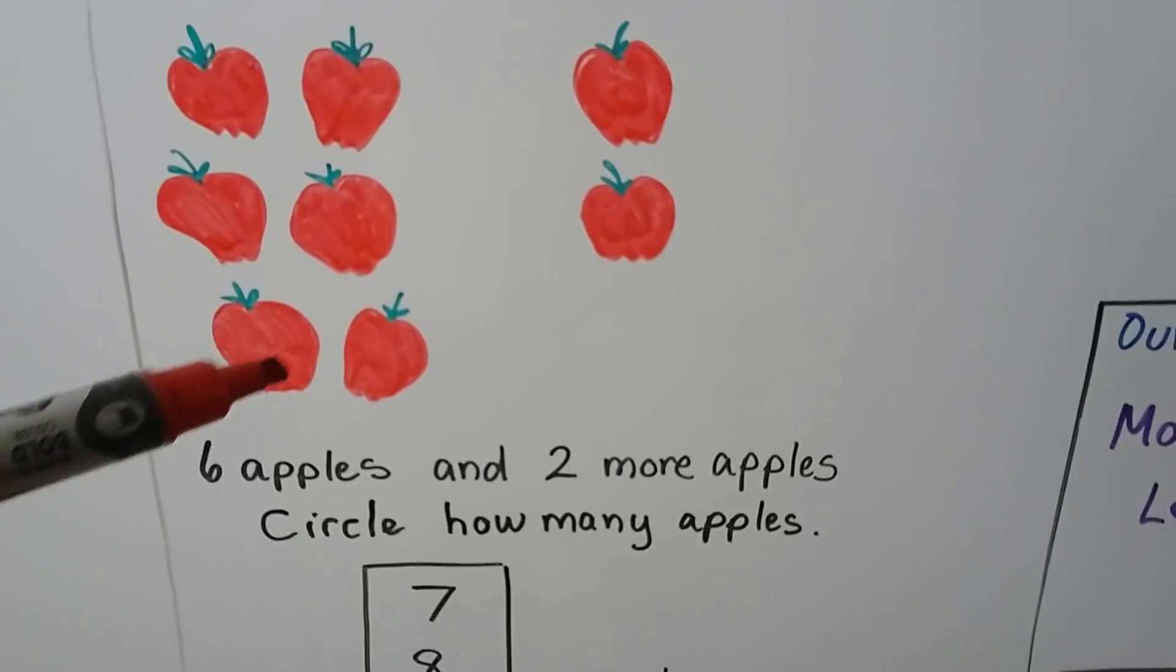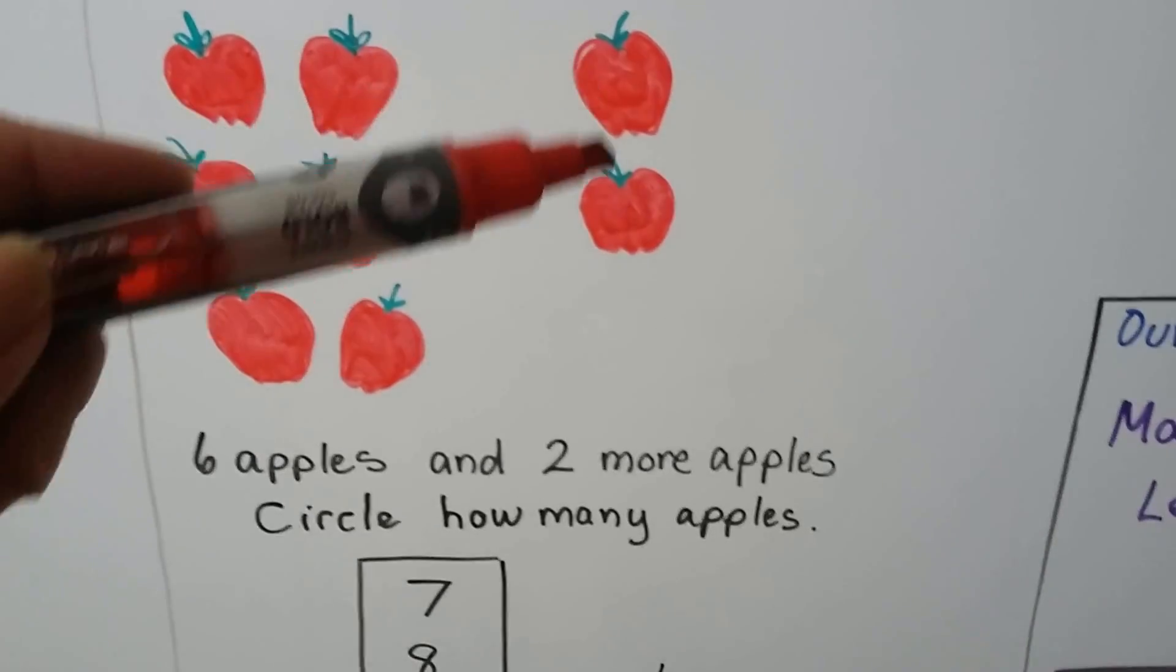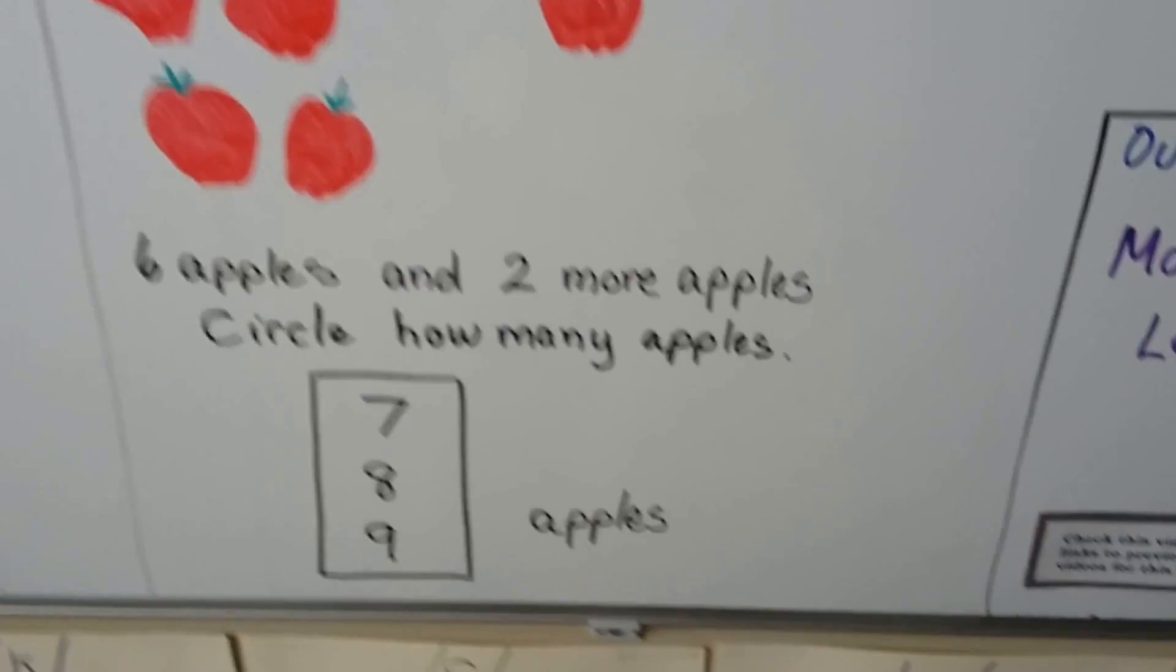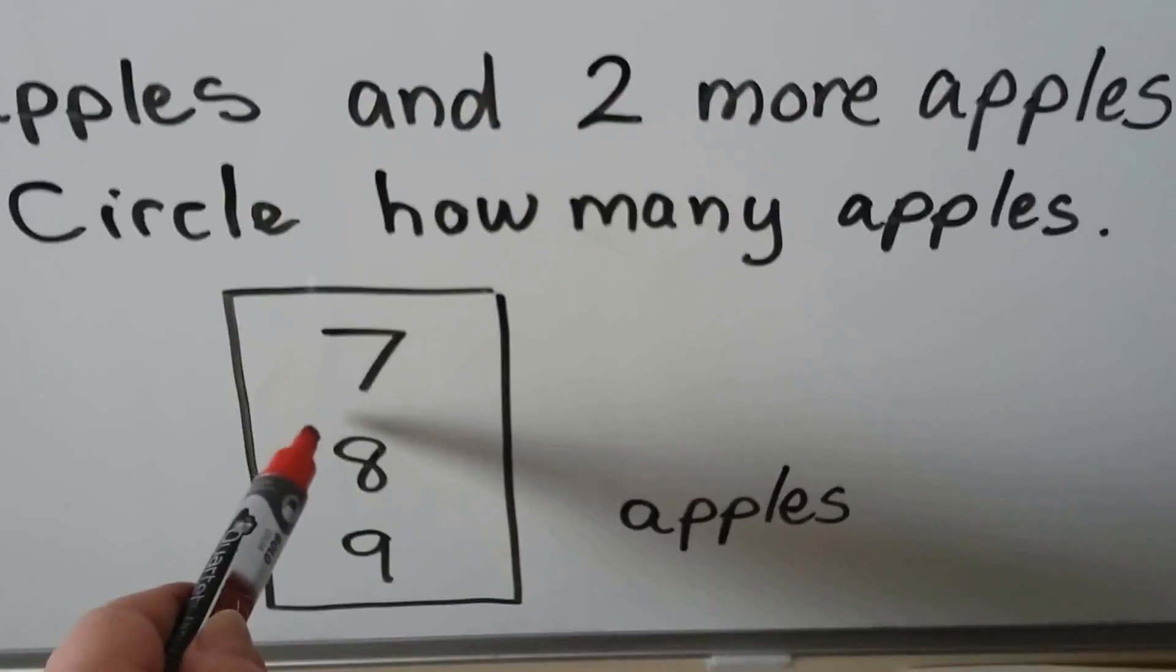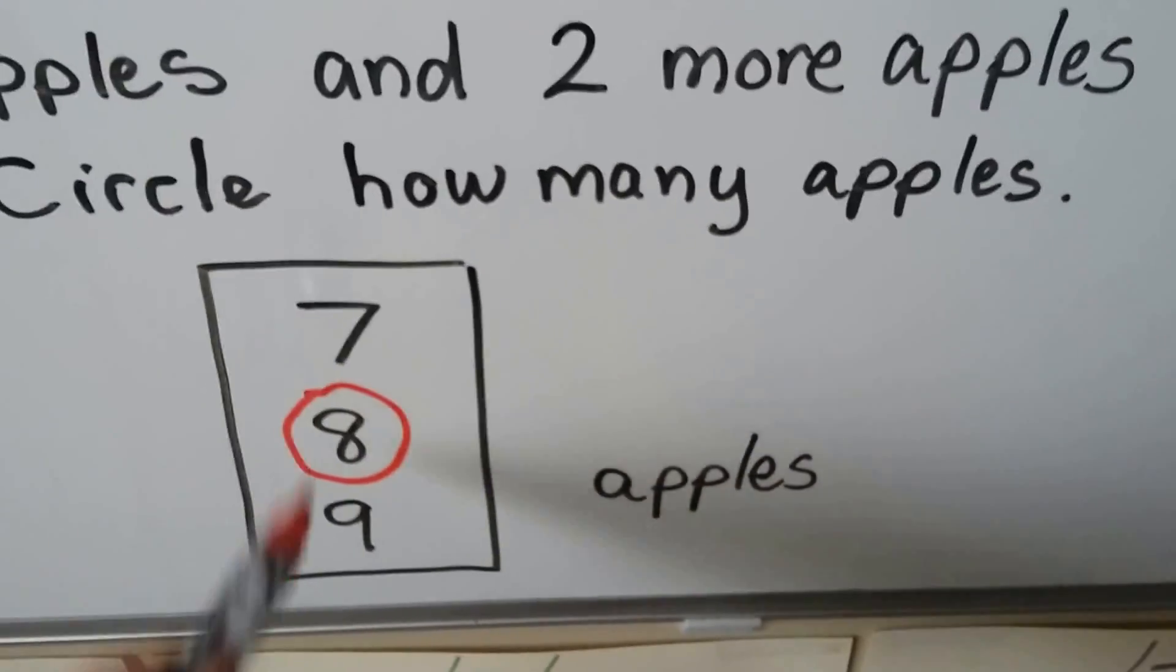One, two, three, four, five, six, seven, eight. We pick the correct number, eight, and that's what we circle. Eight apples.